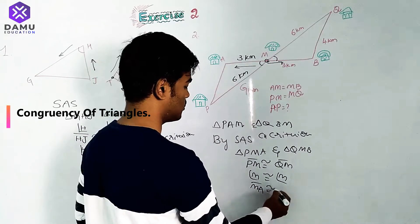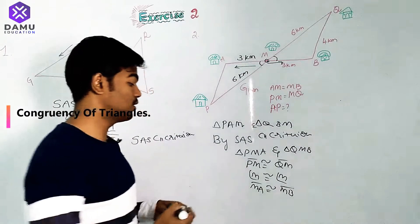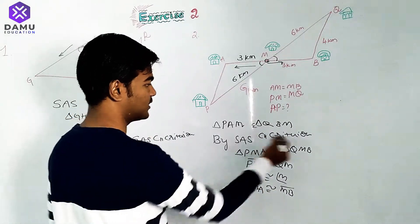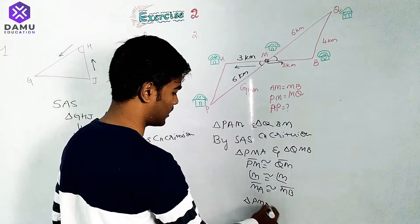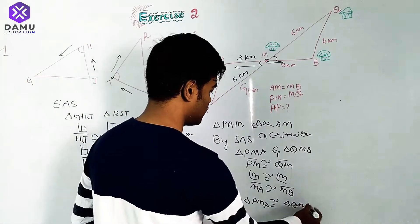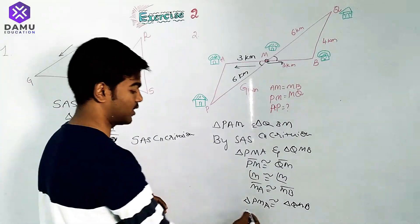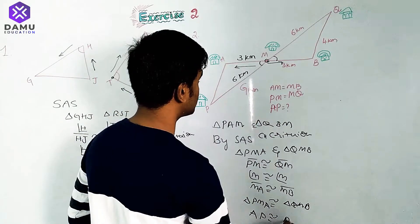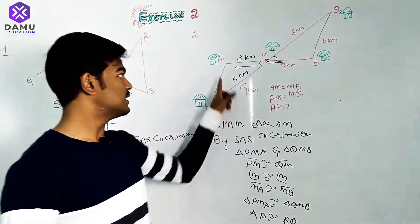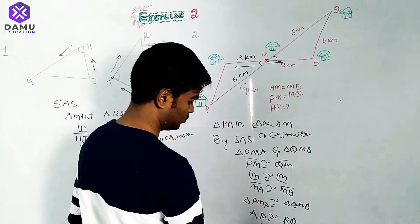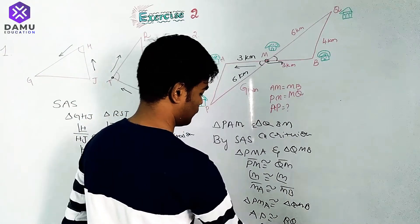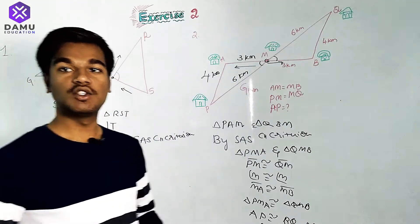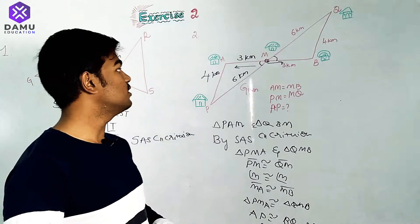By the SAS congruency criterion, triangle PMA is congruent to triangle QMB. Since all corresponding parts are equal, AP is congruent to BQ. Given that BQ equals 4 kilometers, AP is also equal to 4 kilometers.